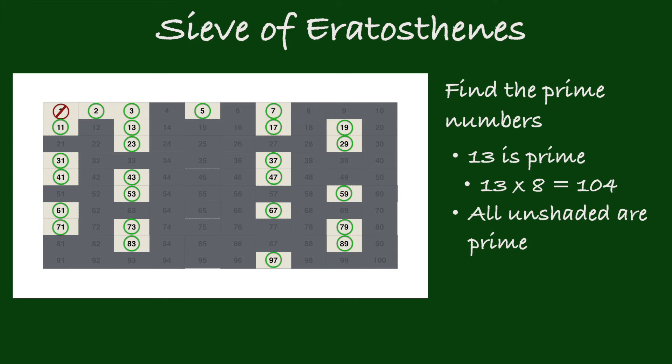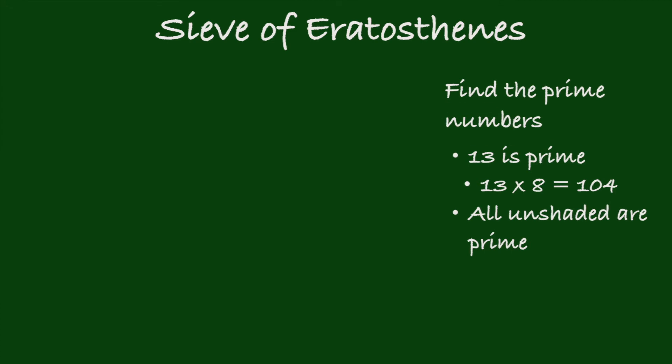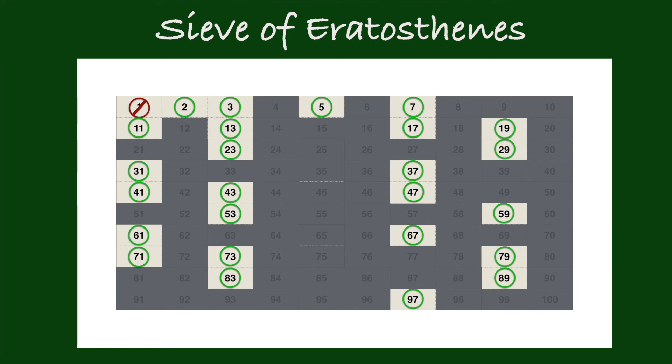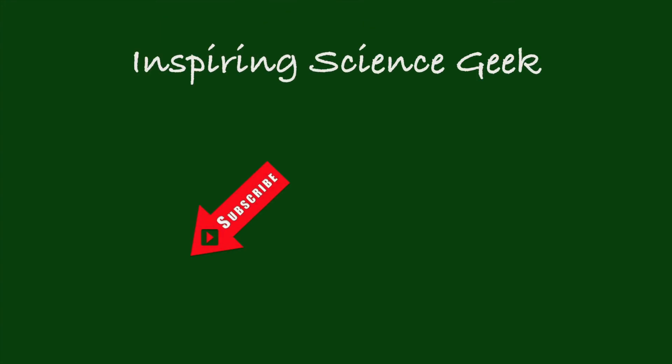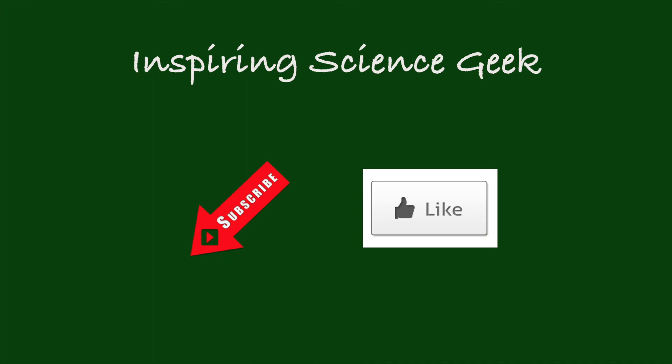So there you have it! Here are all the prime numbers less than 100, found using the Sieve of Eratosthenes. Let me know if you want more videos through the comments, and please give a like if you enjoyed watching this video. Remember, learning is fun!